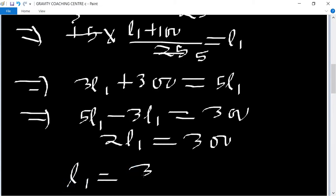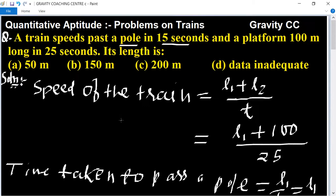Therefore L1 equal to 300 upon 2, which is 150. 150 meters is the length of the train. Option B is the right answer.